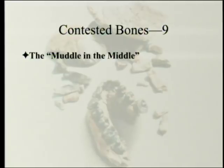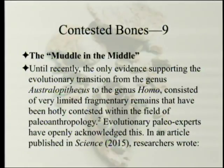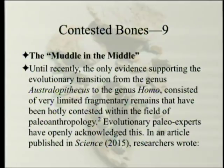The chapter is entitled 'The Muddle in the Middle,' setting the stage that all of the other material that came before doesn't give you a good ape-to-human progression. Until recently, the only evidence supporting the evolutionary transition from the genus Australopithecus to the genus Homo consisted of very limited, fragmentary remains that have been hotly contested within the field of paleoanthropology.